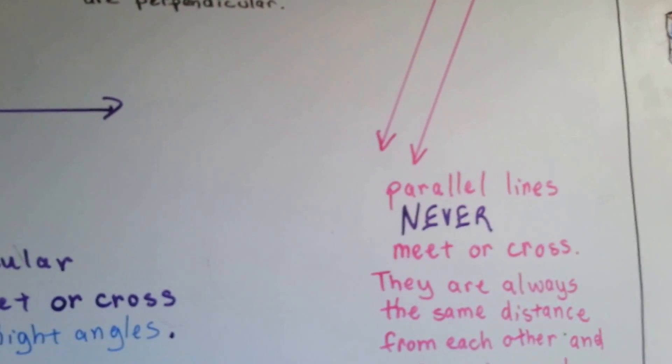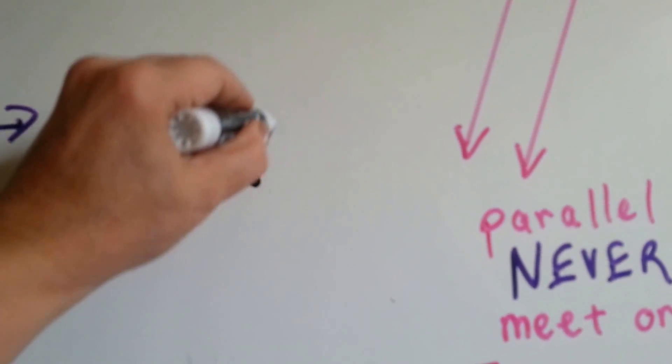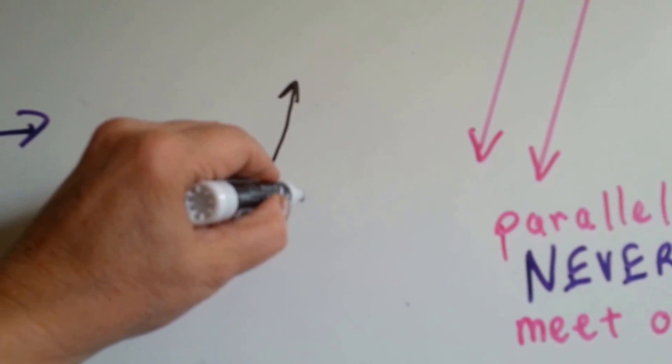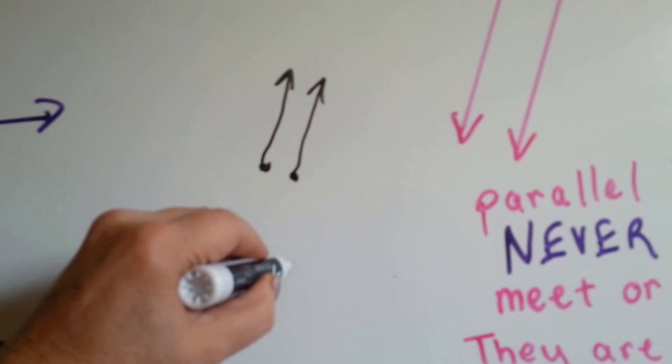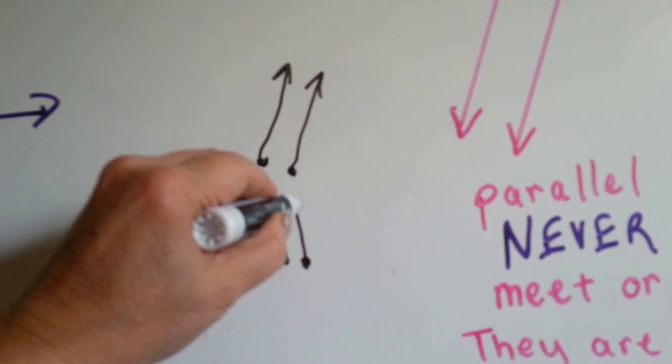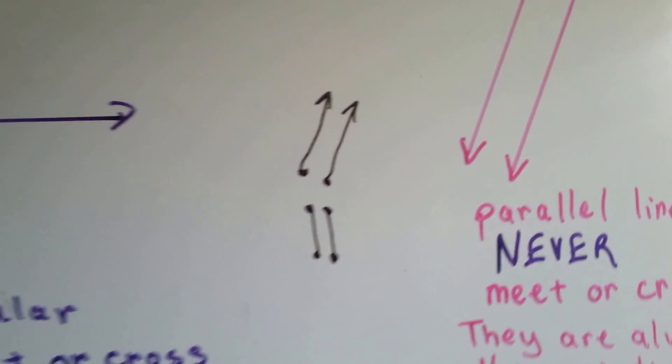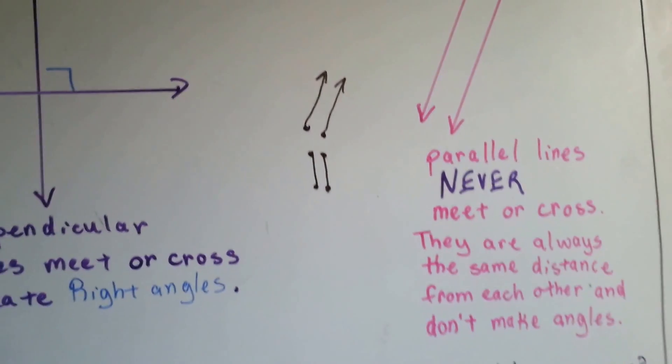You could have parallel rays and you could have parallel line segments. Parallel rays would go like this. Parallel line segments would go like this. They still wouldn't cross or make angles or touch each other and would stay the same distance apart.